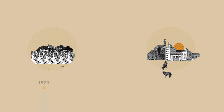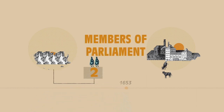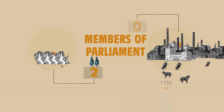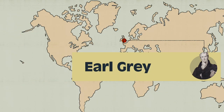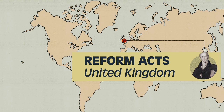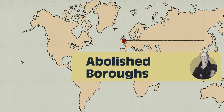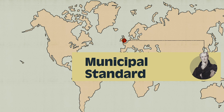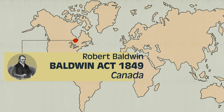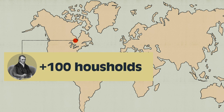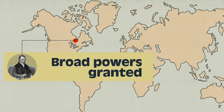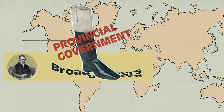Over the centuries, some boroughs became depopulated yet still had two members of Parliament, while burgeoning industrial cities had none, and their elections excluded many citizens. Prime Minister Earl Grey overhauled parliamentary and municipal governance with reform acts, abolishing many boroughs and replacing their various structures with one municipal standard. The Baldwin Act granted incorporation to areas of at least 100 households — a reference to the ancient hundred — and granted broad powers which provinces would reduce later.